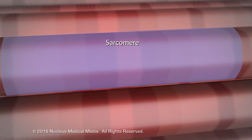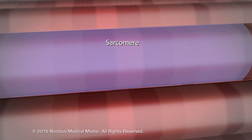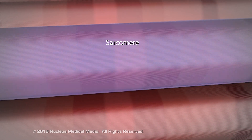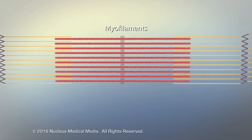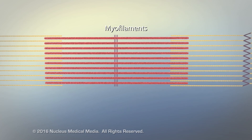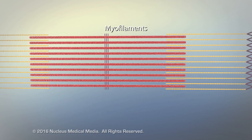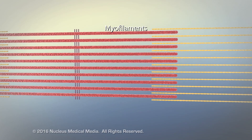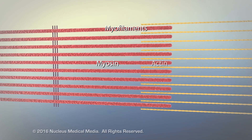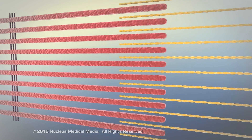Inside a muscle fiber, thread-like structures called myofibrils are organized into contractile units, or sarcomeres, reflecting the striations characteristic of skeletal muscle. Each sarcomere is made up of thick and thin myofilaments — strands of proteins called myosin and actin. Myosin forms thick filaments; actin forms thin filaments.